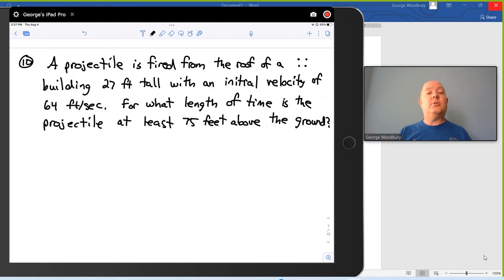and in this video we're going to take a look at a quadratic inequality that's an application of the height of a projectile after t seconds. So we're told a projectile is fired from a roof of a building 27 feet tall with an initial velocity of 64 feet per second. For what length of time is the projectile at least 75 feet above the ground?